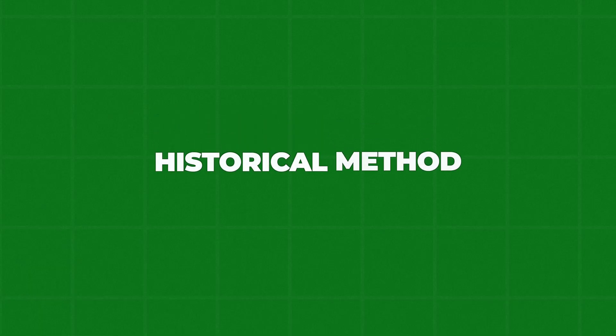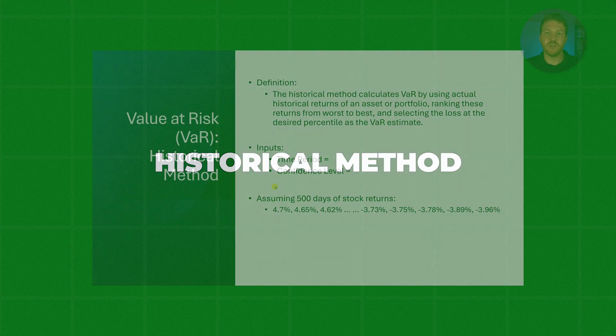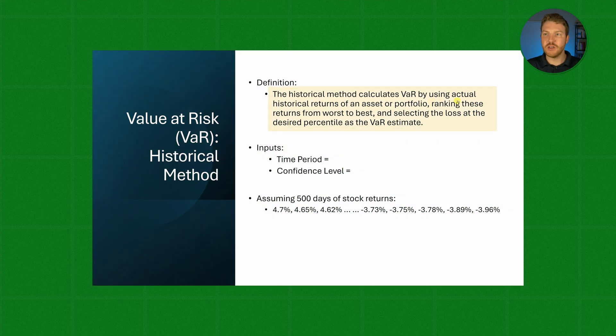Now let's dive into what I believe is the most straightforward method for calculating VaR. The historical method calculates VaR by using actual historical returns of an asset or portfolio, ranking these returns from worst to best, and selecting the loss at the desired percentile as the VaR estimate.